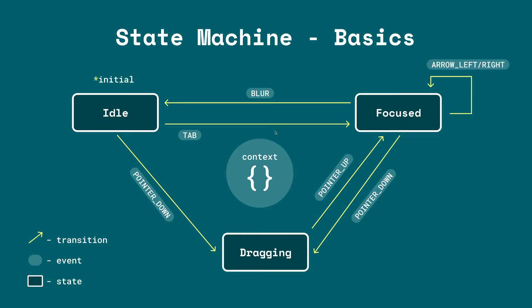All of the different interactions I've shown can be represented in a flowchart, or basically a state chart, so you can understand the different states and transitions between them. The states are represented with boxes — idle, focus, and dragging — and the transitions are modeled with arrows indicating events like blur and tab. Within a state chart, when you transition between states you can modify an object called context, which holds extended state information specific to the machine, such as minimum value, maximum value, and whether the slider is disabled. The initial state is idle, indicated with an asterisk.